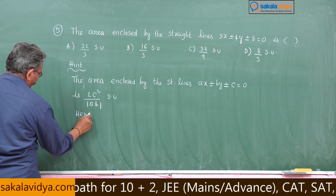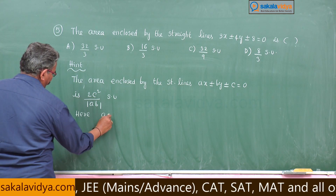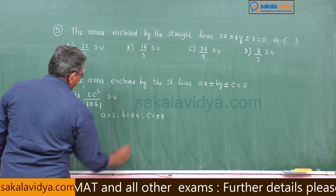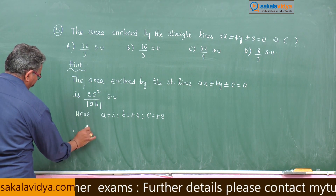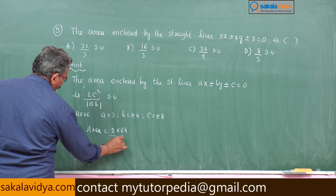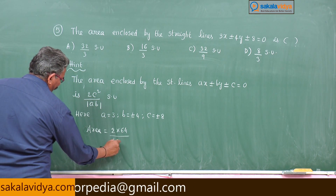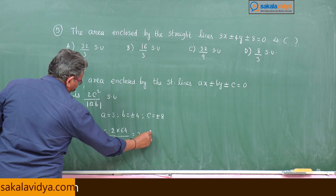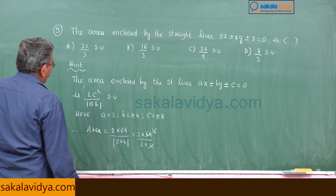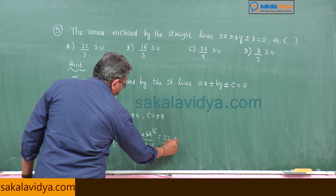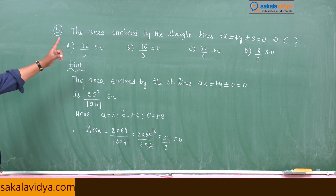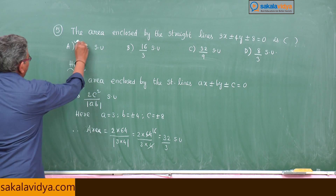Here A = 3, b = 4, c = 8. Therefore area = 2 × c² / |ab| = 2 × 64 / (3 × 4) = 128 / 12 = 32/3 square units. So option A is the right answer.